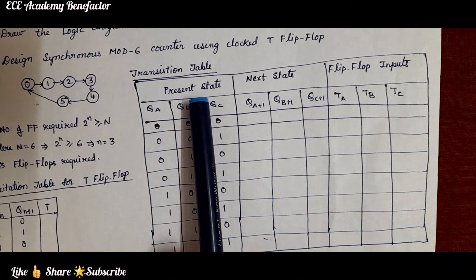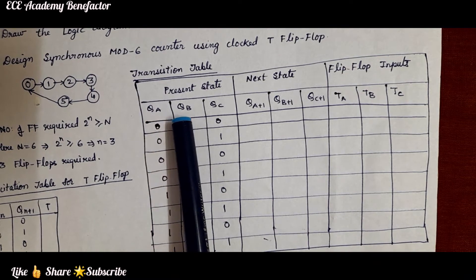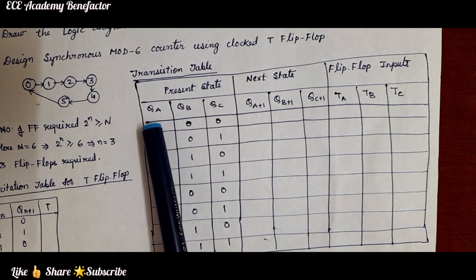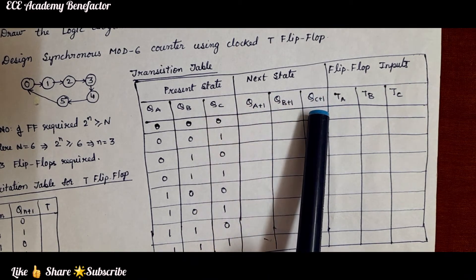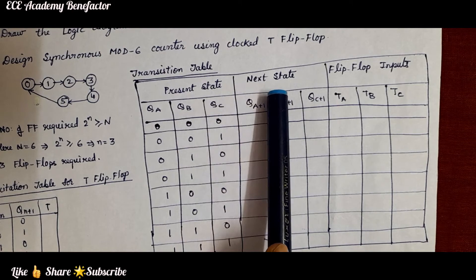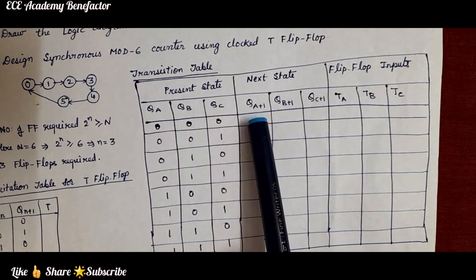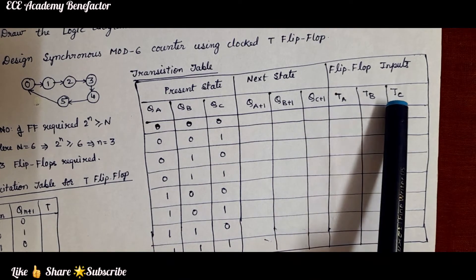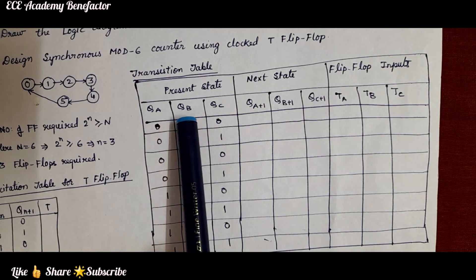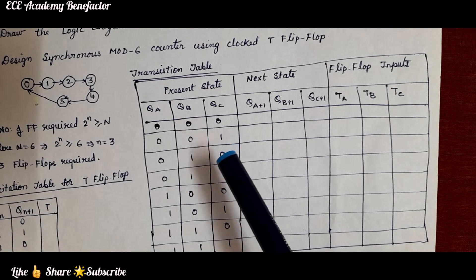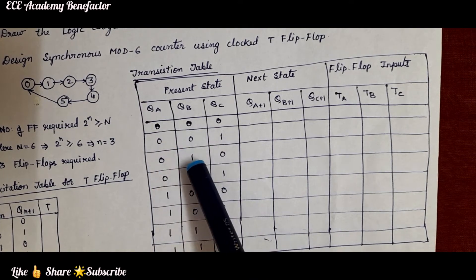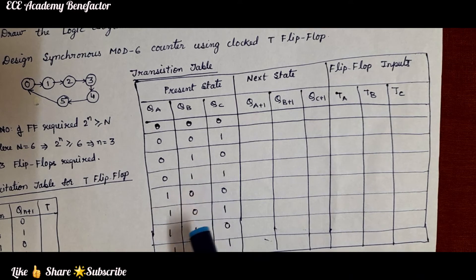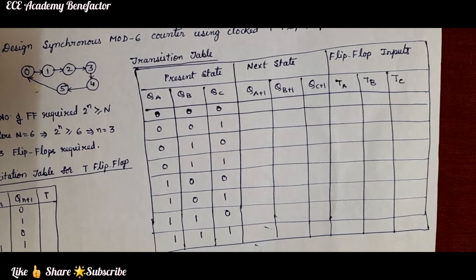With 3 inputs QA, QB, QC we can write 8 combinations for the present state: 000, 001, 010, 011, 100, 101, 110, and 111. For mod six, only states 0 to 5 are valid; states 110 (6) and 111 (7) are don't care states.